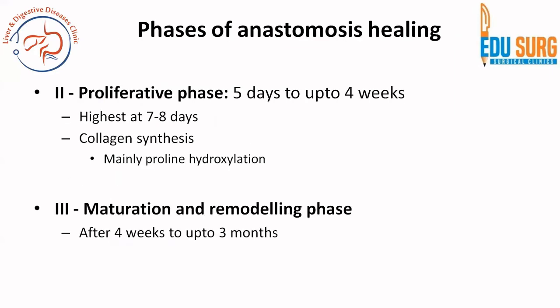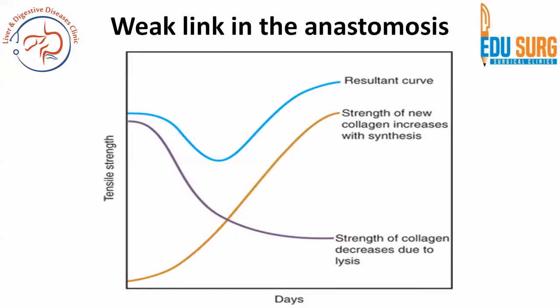That is why the anastomosis needs to be protected in patients on any of these therapies, because if the acute inflammatory phase is affected, the anastomosis can give way in the first three to four days of surgery. The proliferative phase goes from five days up to four weeks, with the highest collagen synthesis at seven to eight days, mainly by proline hydroxylation. The third phase is maturation and remodeling, which goes from one month up to three months.